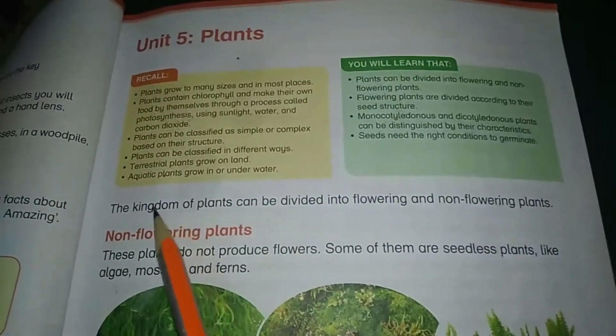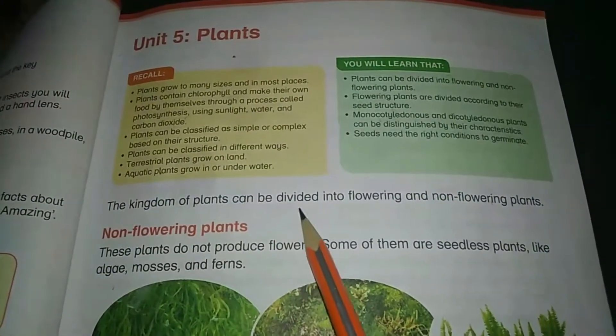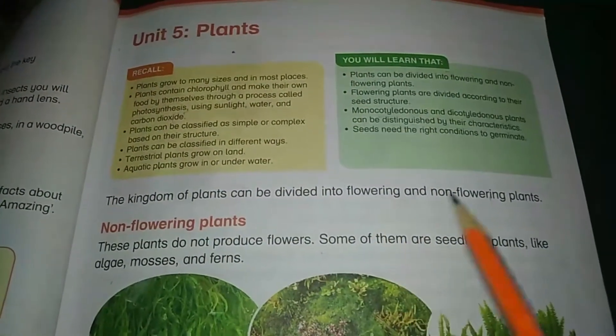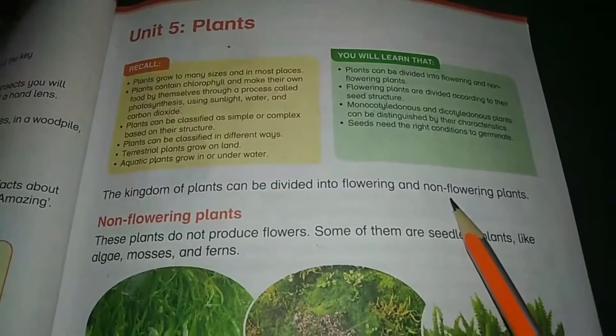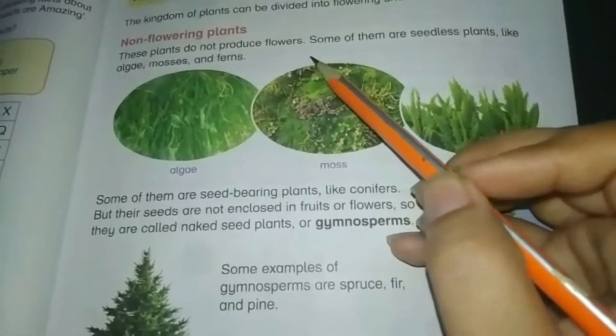Like the animal kingdom, the kingdom of plants is also divided into two groups: flowering plants and non-flowering plants. First of all, we will discuss about non-flowering plants.